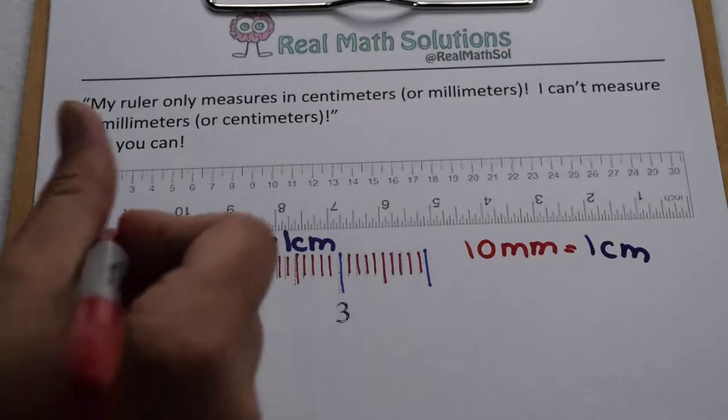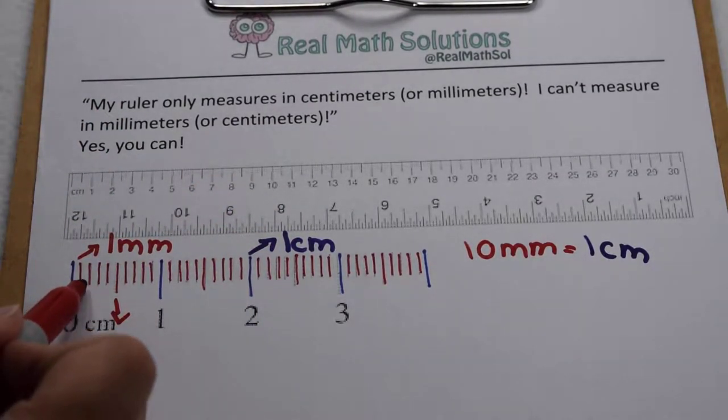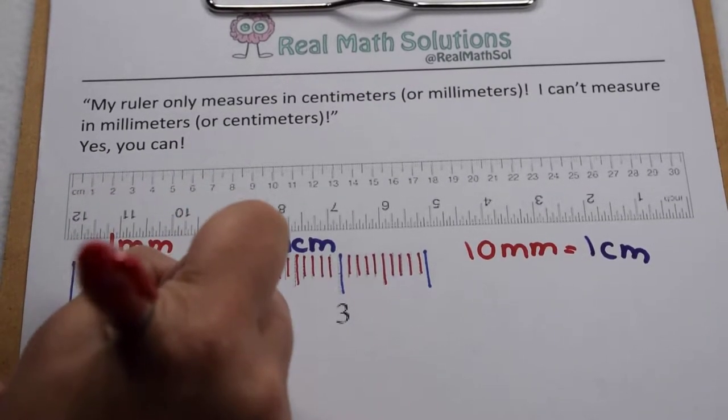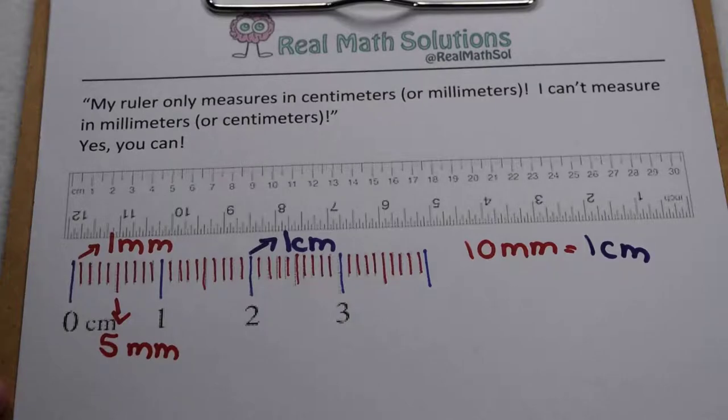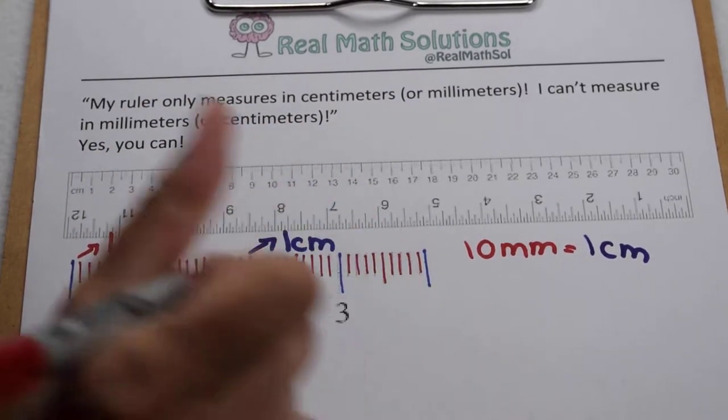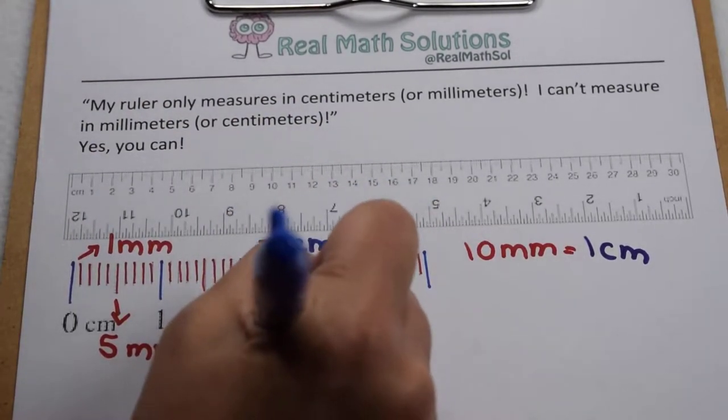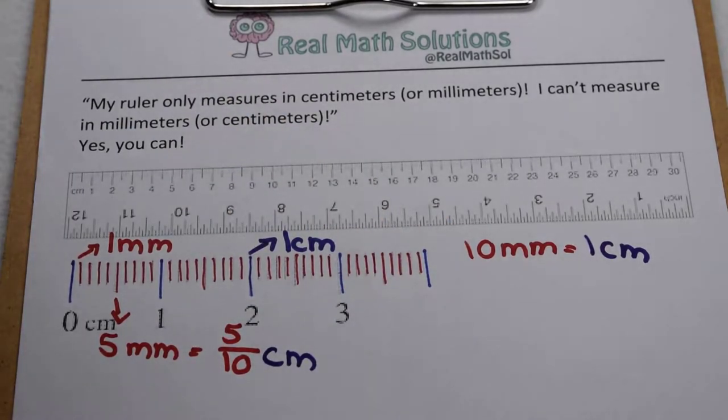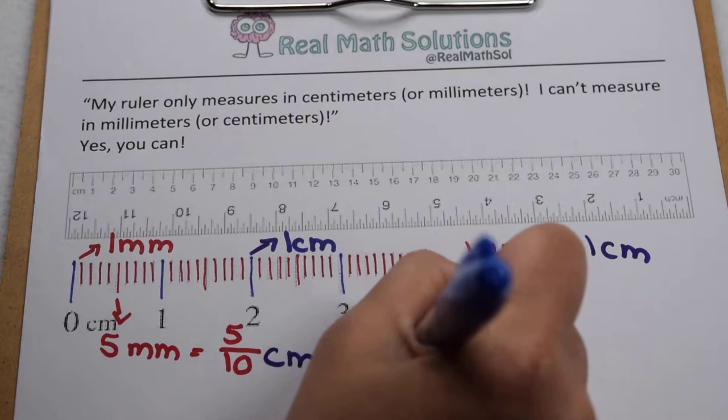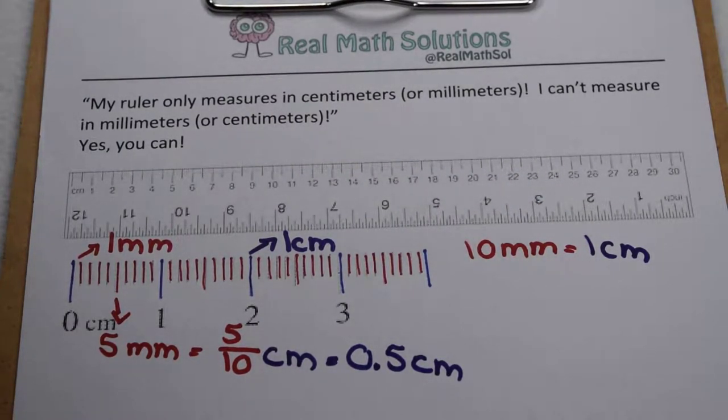So if we look here, if I take this longer one here in the middle, that's at one, two, three, four, five millimeters. Okay, that's still in centimeters though, because I know it takes 10 millimeters to make a centimeter and I have five of them. So that means I have five tenths of a centimeter, or rewrite that as a decimal and I still have five tenths of a centimeter.